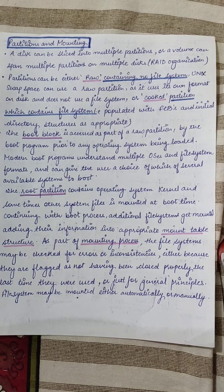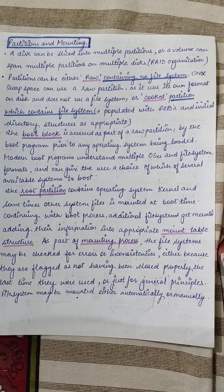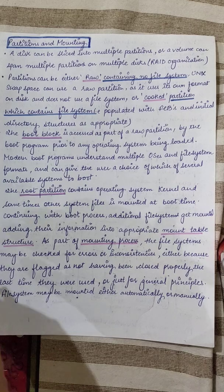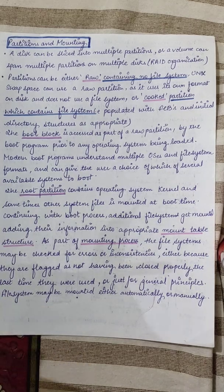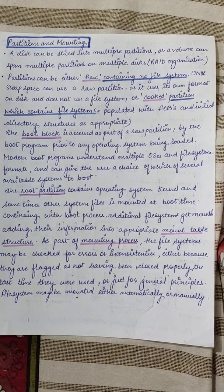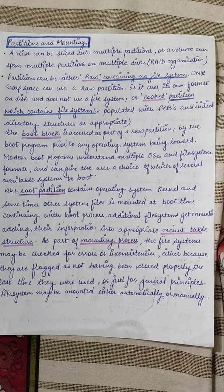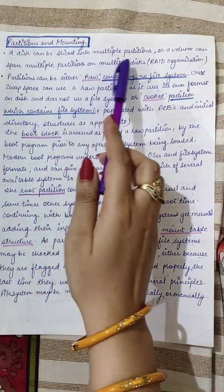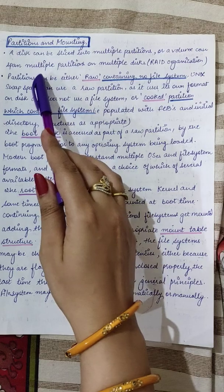Generally, what happens is that a disk can be sliced or distributed into multiple partitions. Everybody does the same thing — you partition your disk into multiple partitions so that organizing files becomes easy, instead of having one disk and storing all files there, which would make things cumbersome. Commonly, partitions are labeled like C, D, E, making file management easier. A disk can be sliced into multiple partitions, or a volume can span multiple partitions on multiple disks.